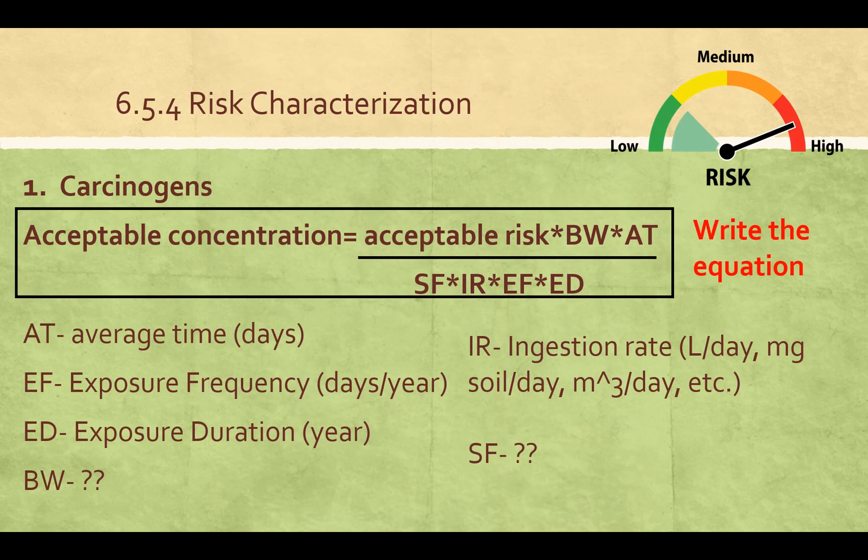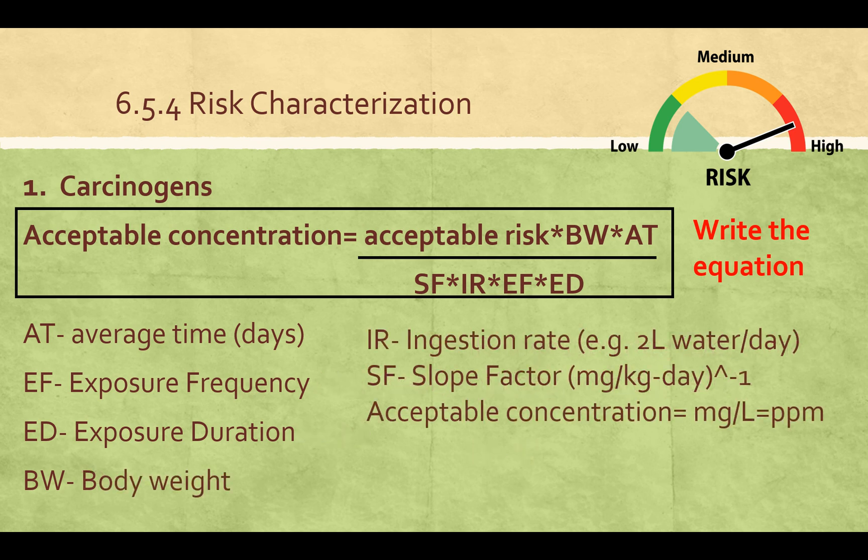We were left with SF and BW. BW is body weight, usually in kilograms. SF is slope factor — we went over these before and you can look them up in the IRIS database. Slope factor is in units of milligrams per kilogram per day.